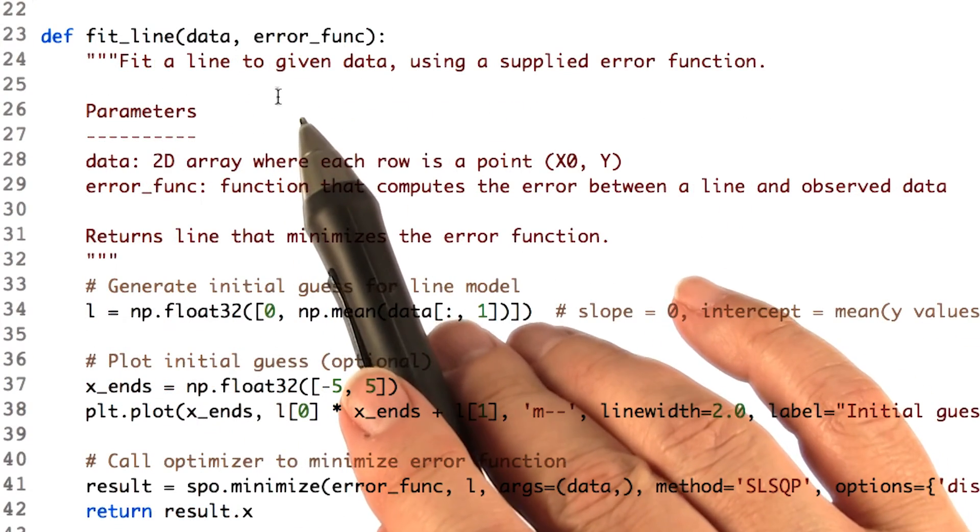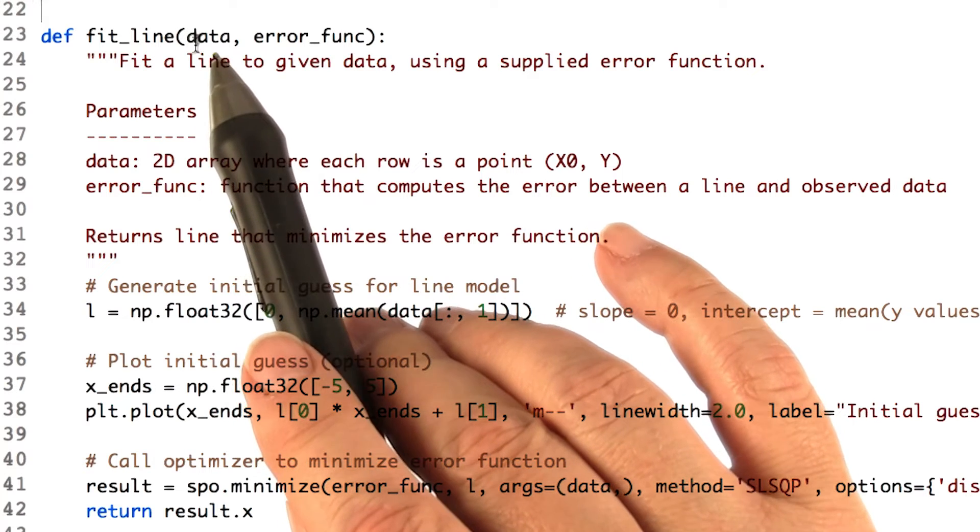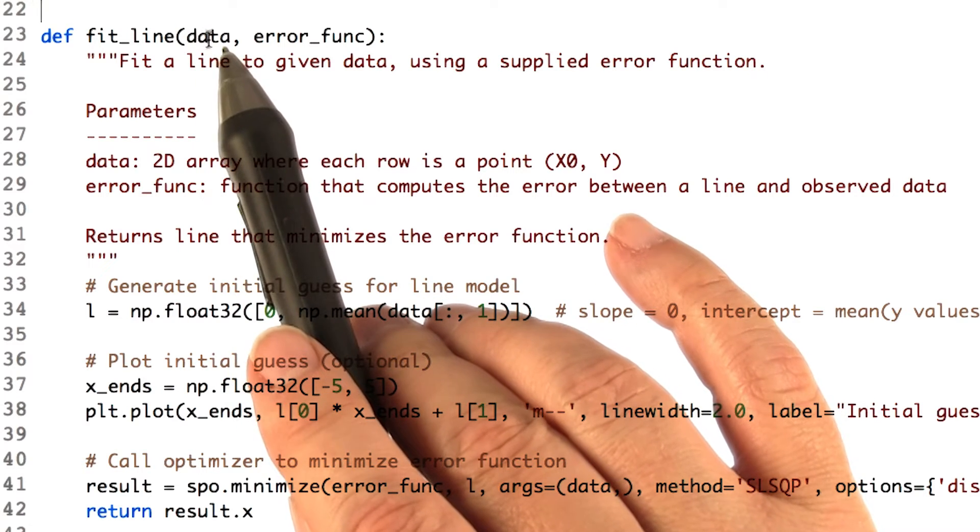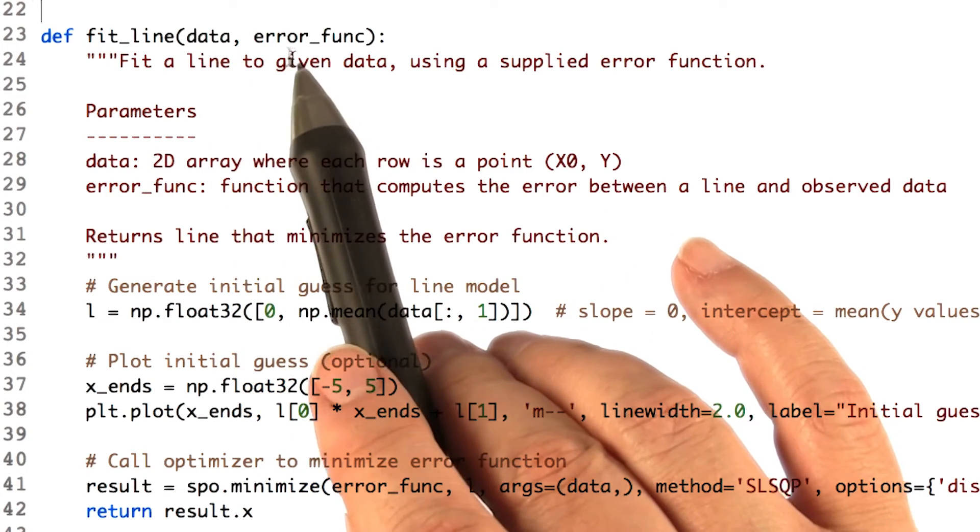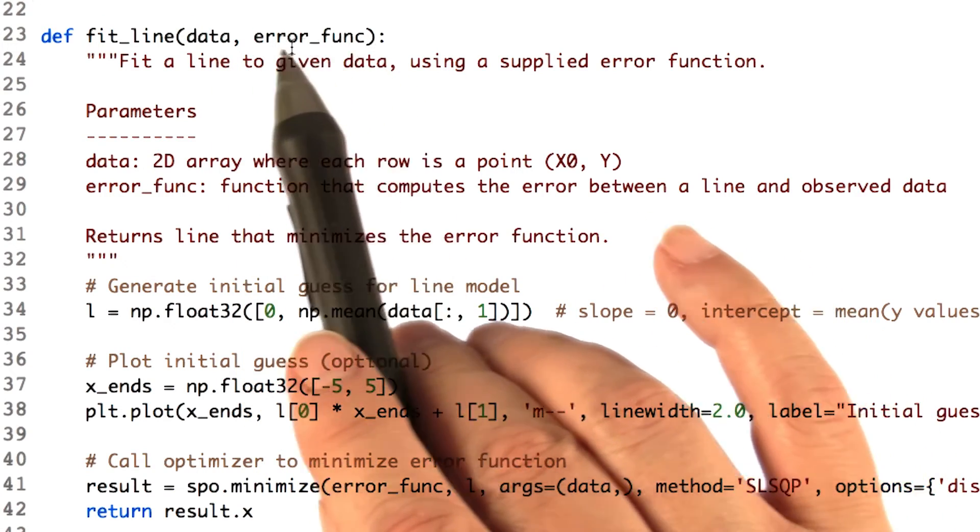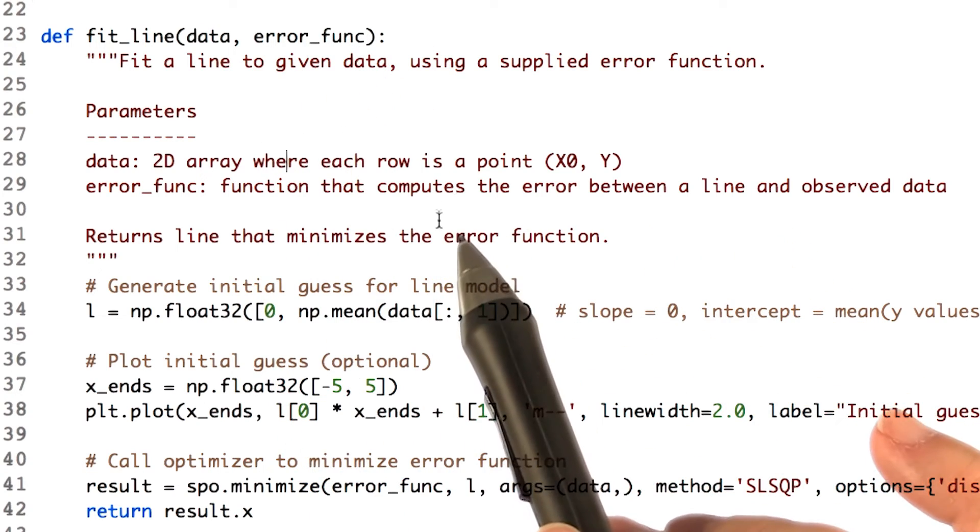Here's fit line that does that for us. Two parameters, the data, so remember this is noisy data that is approximately a line. In other words, we took our original line and added noise to it. And the error function, or the function we're trying to minimize. We have some nice comments here that tell us what those are.